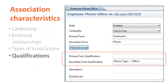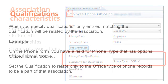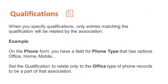Finally, let's talk about qualifications. Qualifications ensure that only entries matching specific criteria are used during the relationship. As shown in the example, there can be different types of phone number options. However, you can choose to associate only those phone numbers that have a phone type of office. You can qualify these records for association using the qualification fields in association. Using qualifications, you can also create different relationships between entries in the same two forms.